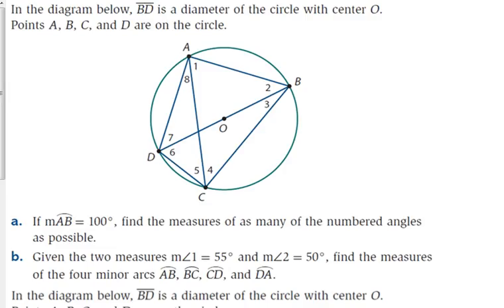Let's use that to figure out the answers to this question. BD is a diameter of the circle with center O, and A, B, C, D are on the circle. If the measure of arc AB is 100 degrees, find the measures of as many of the numbered angles as possible. It would be great if we had a central angle matching that 100 degrees, but we don't. This angle is not a central angle because its vertex is not at the center, so it is not 100 degrees.